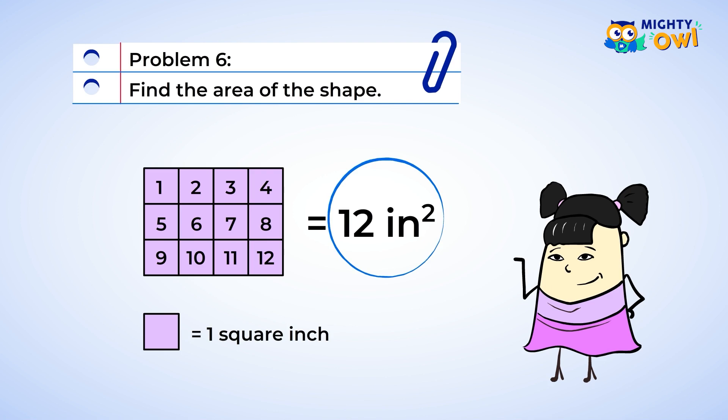This means the area is 12 square inches. How we found that area sure seemed familiar. That rectangle looks like an array. And we found the area the same way we learned about multiplication. How interesting. I bet we explore more of that in a video soon.